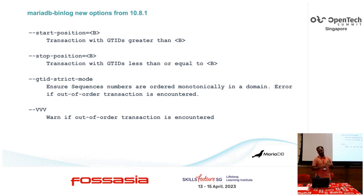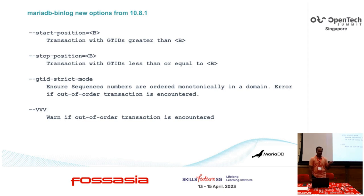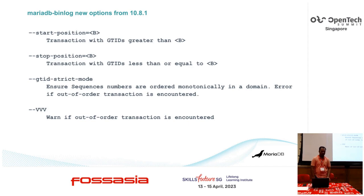The start position and stop position options are already available in the MariaDB binlog utility. But previously we could only pass log positions in these variables. Now you can also pass GTIDs for start and stop positions, and the MariaDB binlog utility is more aware of GTID strict mode. When you are applying binary logs on another server, you can enable GTID strict mode. Using the verbose flag (-vvv), you will get a warning for out-of-order transactions, which usually occur when there are writes on the replica, and when strict mode is enabled, replication breaks with the out-of-order sequence error.